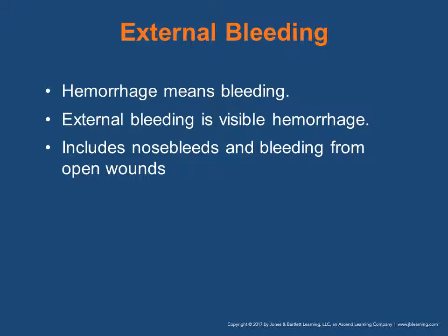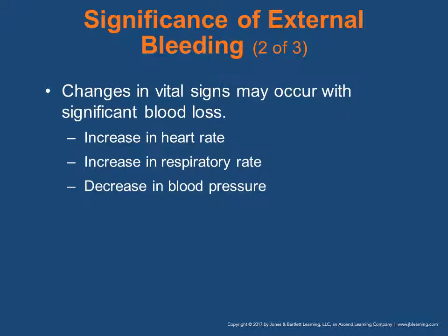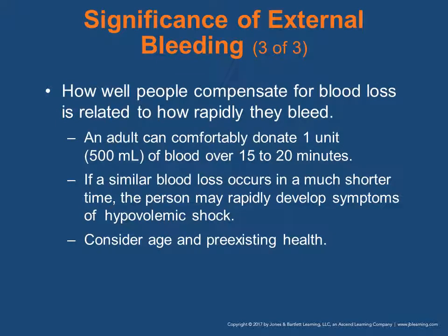External bleeding means hemorrhage — visible hemorrhage that includes nosebleeds and bleeding from open wounds. With serious external bleeding, it may be difficult to tell the amount of blood loss. Blood looks different on different surfaces, and estimating external blood loss is very difficult. The body will not tolerate a blood loss greater than 20% of blood volume. Changes in vital signs may occur with significant blood loss, including increased heart rate, increased respiratory rate, and decreased blood pressure. How well people compensate for blood loss is related to how rapidly they bleed. An adult can comfortably donate one unit or 500 milliliters of blood over 15 to 20 minutes; if a similar blood loss occurs in a much shorter time, the person may rapidly develop symptoms of hypovolemic shock. Consider age and pre-existing health conditions.